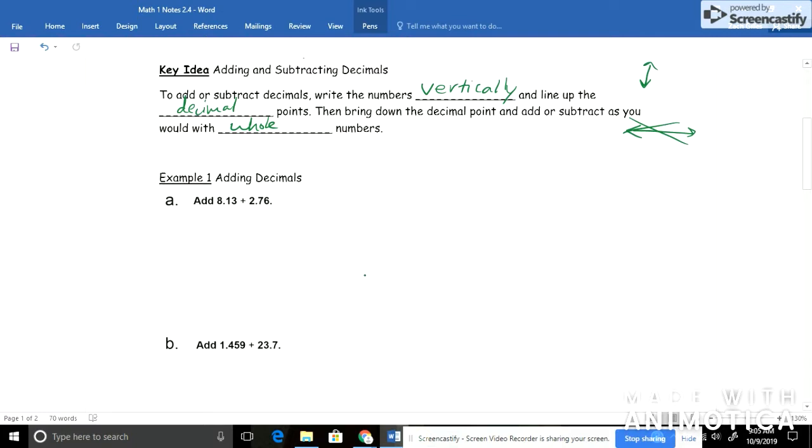We've got, for example, add 8.13 plus 2.76. Well for this one it's not too hard because they both have three places. So this one isn't going to be too tricky. 8.13 plus 2.76. I'm lining them up vertically and just add like you normally would with whole numbers. So 3 plus 6 is 9, 1 plus 7 is 8, and 8 plus 2 is 10.